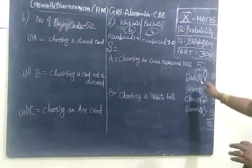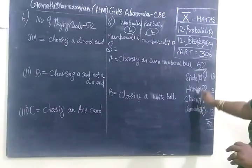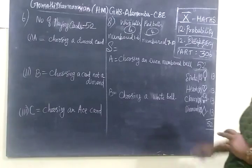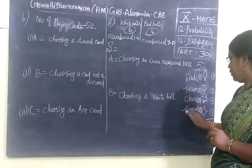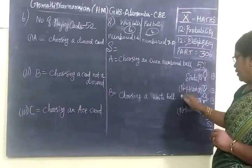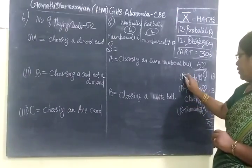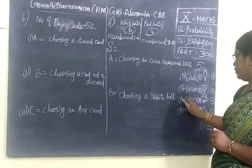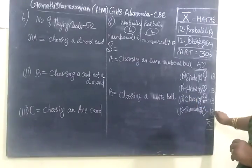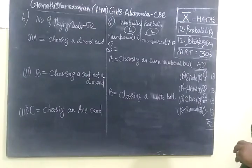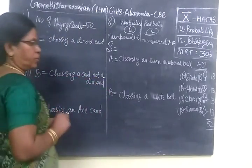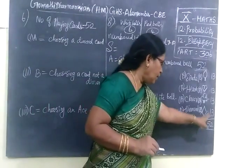Spade and Clover are black cards, while Heart and Diamond are red cards. So in total: 13, 13, 13, 13 — totally 52 cards. So we are choosing a diamond card. Diamond cards — we have 13 diamond cards.